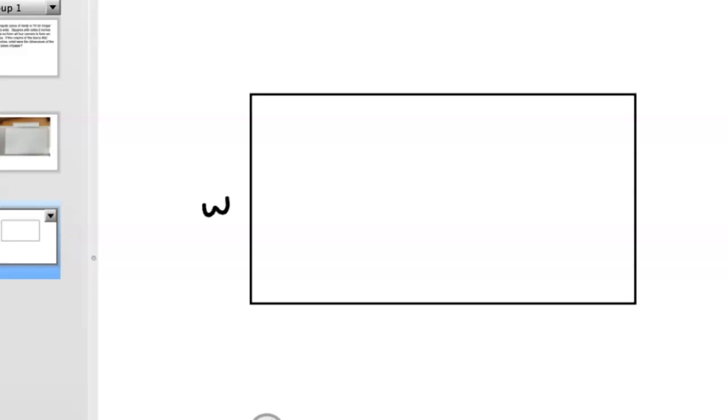So what we have here is we have this width here we don't know, but we do know that the length is 10 centimeters longer than the width. So we know we've got this piece of paper that's, or piece of metal that's W by 10 plus W. So we've got to find out what that W is. And we're going to cut out little squares that are 2 inches long out of every corner.